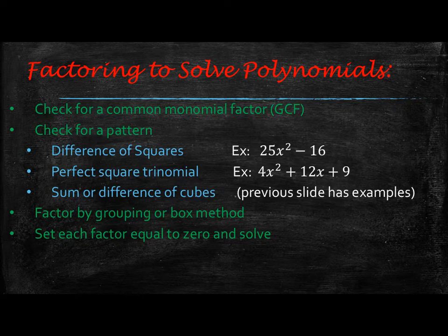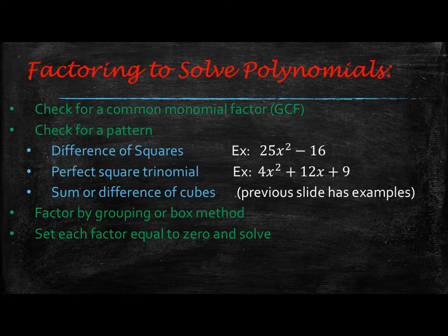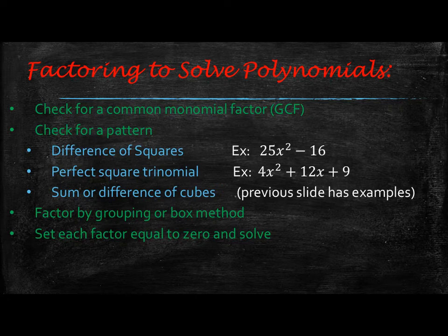When you are factoring to solve, remember your steps. First, look for a GCF — a common monomial factor. Then look for a pattern: difference of squares, perfect square trinomial, or sum or difference of cubes. If you have a pattern, use it. If not, look for grouping — you do grouping with four or more terms. You can get a trinomial to be a four-term polynomial by using the A times C chart or the box method. Then set each factor equal to zero and solve.